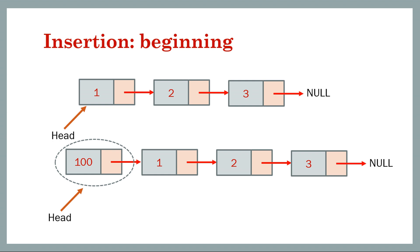First, let's see what happens when we insert a node at the beginning. This is our initial linked list and we usually have a pointer to the first node, which is termed as head. Sometimes we also have a pointer to the last node, but that is usually not given in a problem, so let's ignore it for now. If we have to insert a new node with a value of 100, we have a reference to node 1.